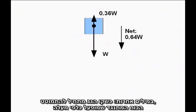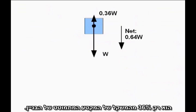In other words, once it starts falling, the upward resistive force is only 36 percent of the weight of the falling section of the building.